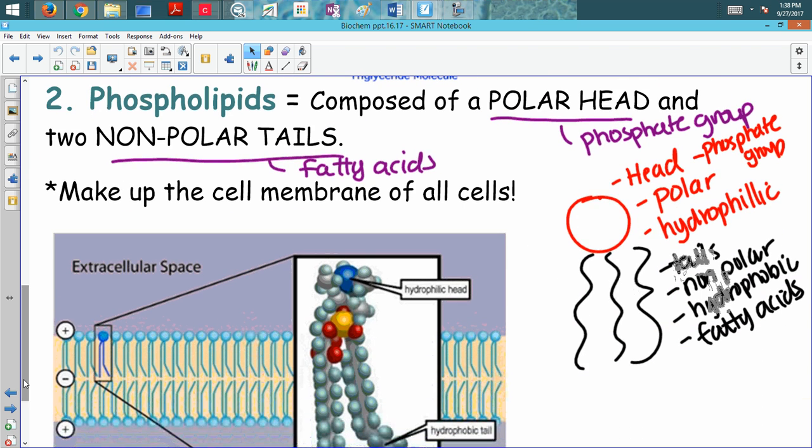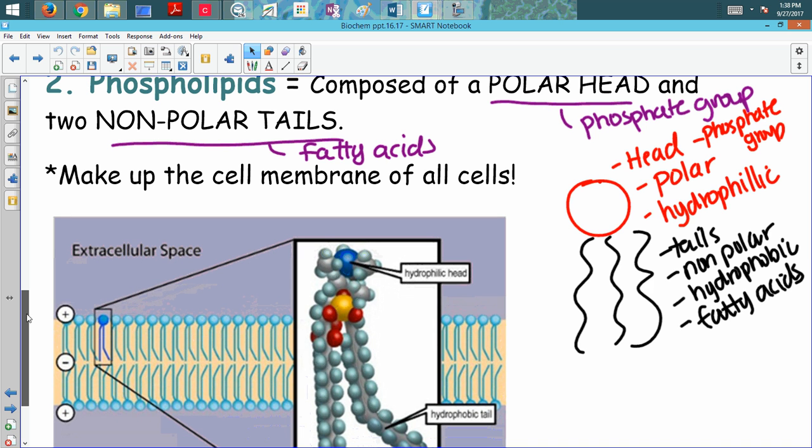The next group are called the phospholipids. Remember how I just said that some lipids have phosphorus? Well, this is that group. The phospholipids actually make up your cell membrane. Every single cell on this planet has a cell membrane, and this is what composes them. The phospholipids have a unique structure, and we're going to highlight some things on here.